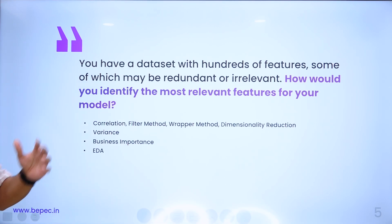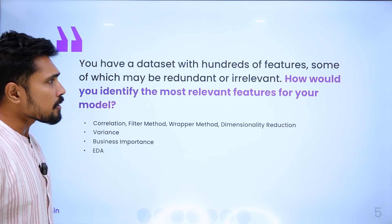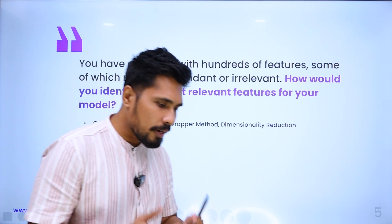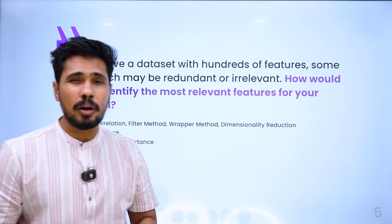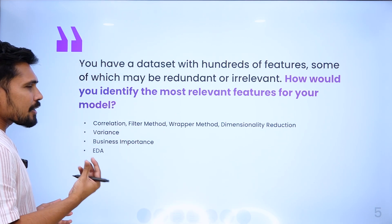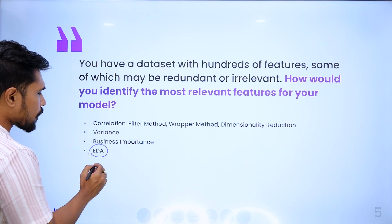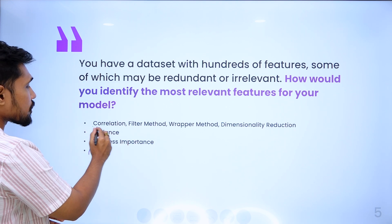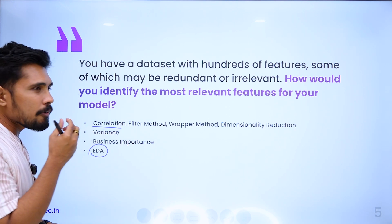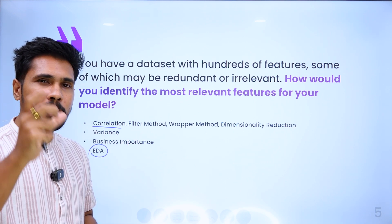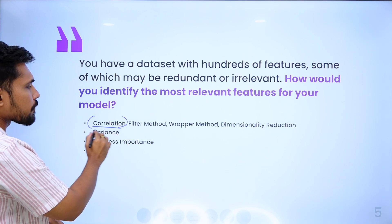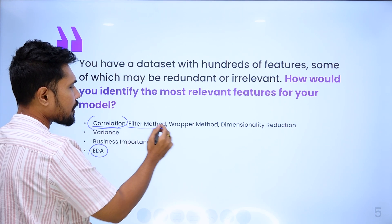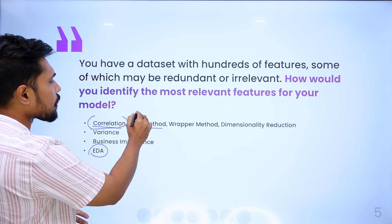The fourth scenario: you have a dataset with hundreds of features, some of which may be redundant or irrelevant. How would you identify the most relevant features for your model? This is about feature selection techniques. In machine learning, you can identify the most important features with EDA — performing univariate, bivariate, and multivariate analysis. As part of bivariate analysis, we have correlation: for continuous data and linear-related parameters, you can identify features using correlation. You can also use variance threshold, Fisher score, and chi-square — these are filter methods.